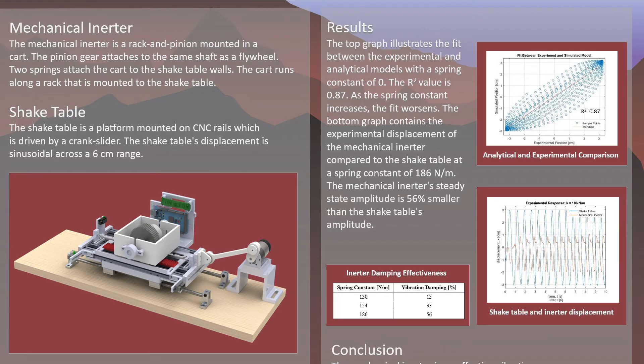Another trend we noticed is that as the spring constant increased, the fit worsened. The table on the bottom left shows that as the spring constant, or spring stiffness, increased, the vibration damping percentage also increased, which was to be expected. The plot on the bottom right shows the experimental response for a spring stiffness of 186 Nm for both the shake table and the mechanical inerter. The shake table displacement over time is shown in blue, and the mechanical inerter displacement over time is shown in orange. Note that there is a slight lag in the mechanical inerter response, but that it is 56% smaller than the shake table response, meaning it reacted as was to be expected.